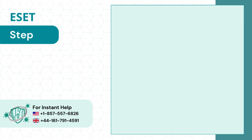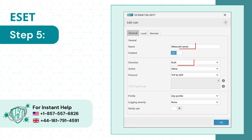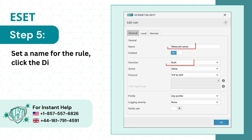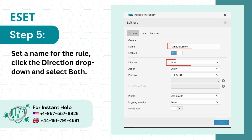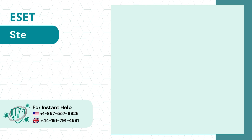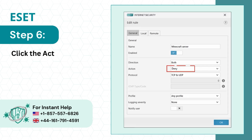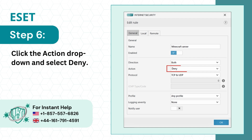Step 5: Set a name for the rule, click the Direction drop-down and select Both. Step 6: Click the Action drop-down and select Deny.